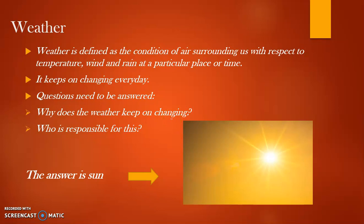Weather also changes from morning to evening - in the morning it is cold, but as sunrise happens and the sun moves upward it gets warmer. So weather changes from morning to afternoon, afternoon to evening, and evening to night, then morning again. Who is responsible for this? The answer is the Sun. The Sun is responsible for the changing of weather from morning to evening throughout the whole day.